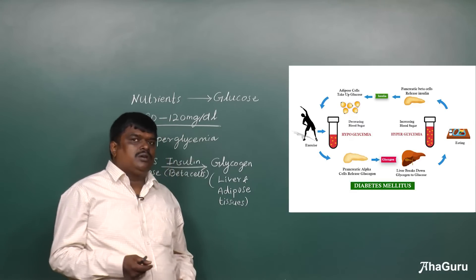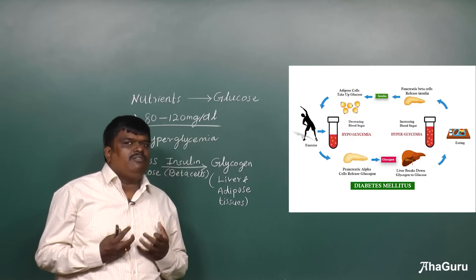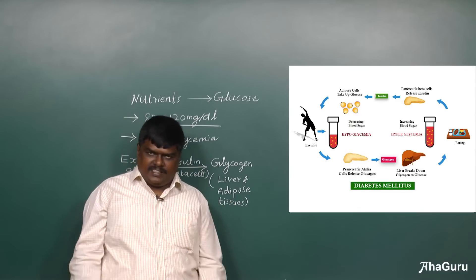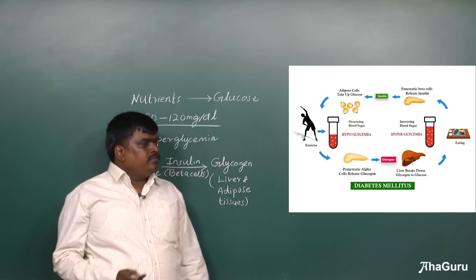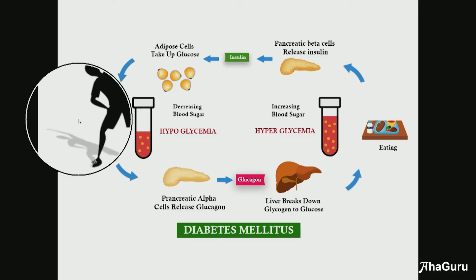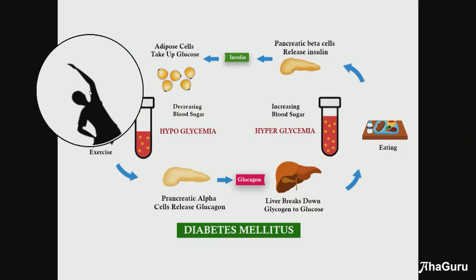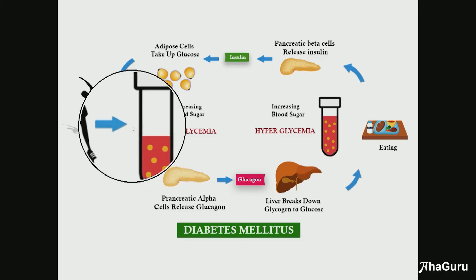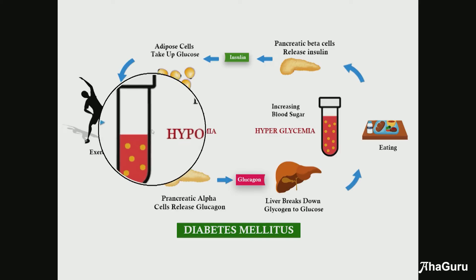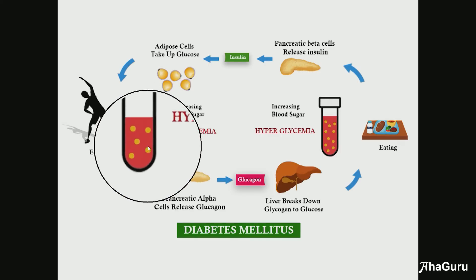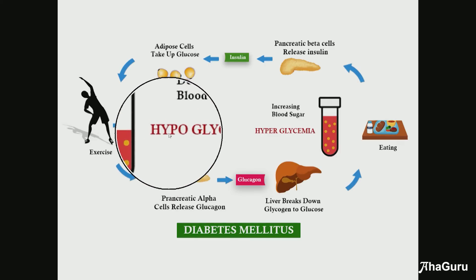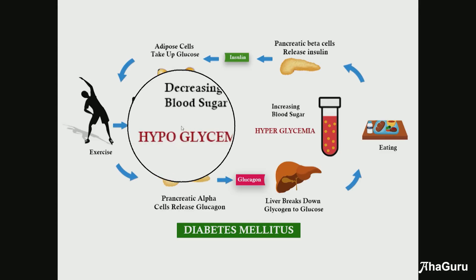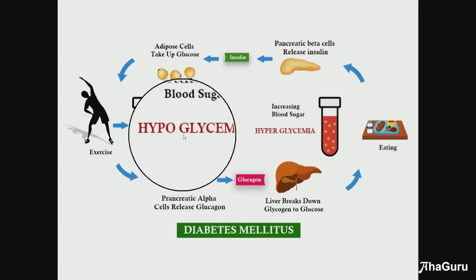Suppose we are fasting or doing some vigorous exercise. Whenever we are doing vigorous exercise or when we are fasting, the blood glucose level lowers. That condition we call hypoglycemia — decreasing blood sugar. That is called hypoglycemia.